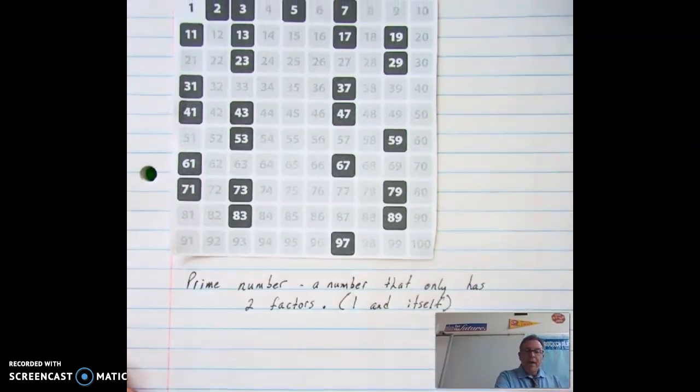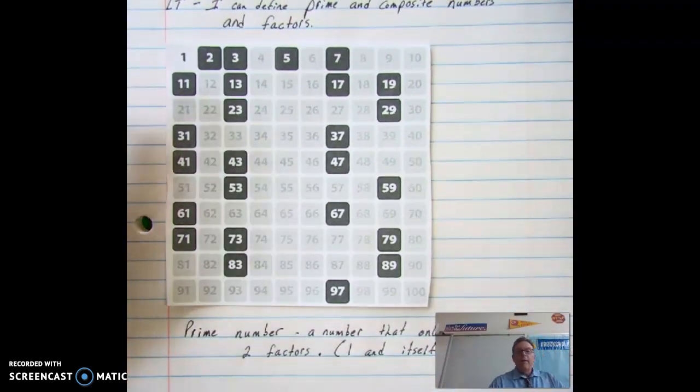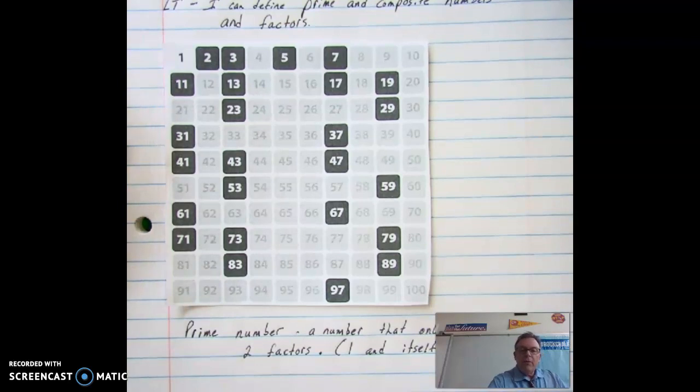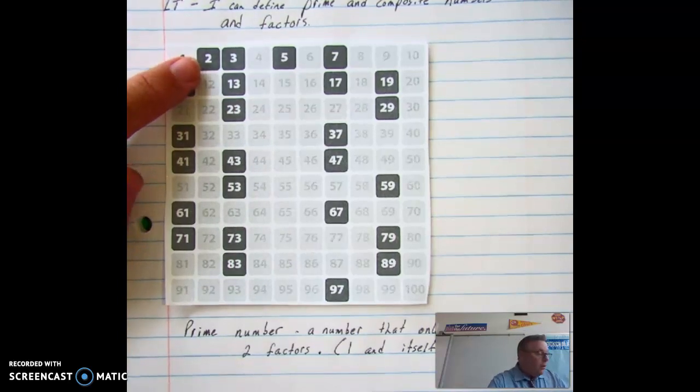So with that being our prime number, if you look at the chart, you'll notice the really dark numbers. Those are your prime numbers. Only two factors. Think about it. What's the only way we can make two? One multiplied by two.